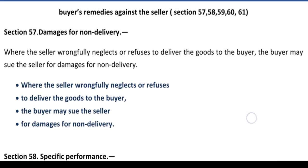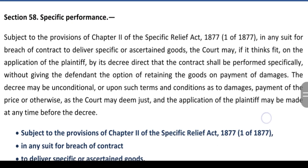अब buyers के remedies against the seller discuss करते हैं — Section 57, 58, और 59। Section 57 — damages for non-delivery. Where the seller wrongfully neglects or refuses to deliver the goods to the buyer, the buyer may sue the seller for damages for non-delivery. अगर seller जानबूझकर refuse कर रहा है या neglect कर रहा है goods hand over करने से, तो buyer को right है कि non-delivery के कारण हुए damages के लिए seller के against suit file कर सकता है।